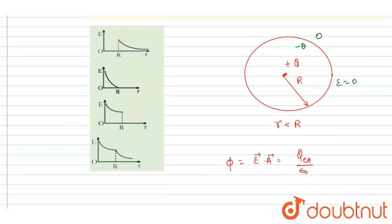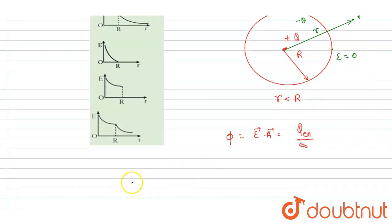So basically when the r will be more than capital R, like let's say this is the point P and this is small r. And when it is more than R, the electric field will be 0.